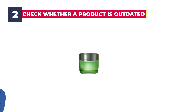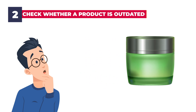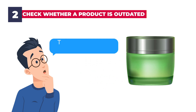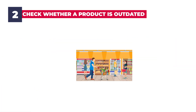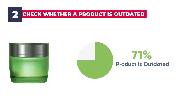Let's look at this second research question. You want to check whether a product is outdated or not. You think the product is not very popular nowadays. However, this is an assumption — until you test your assumption, you do not know. So you send out a survey in the market and 80% of people think that the product is outdated and they do not use this product anymore.